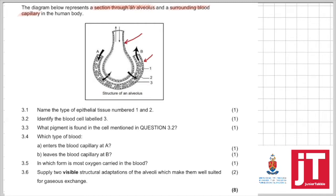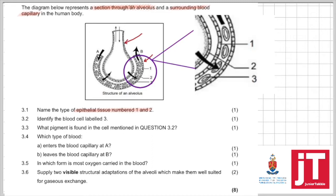Alright, let's have a look at question 3.1. Name the type of epithelial tissue numbered 1 and 2. Now looking at the diagram over there it's quite difficult to see so what I'm going to quickly do is I'm going to blow it up a little bit so that we can identify exactly what is going on there. Right, so let's just have a look.